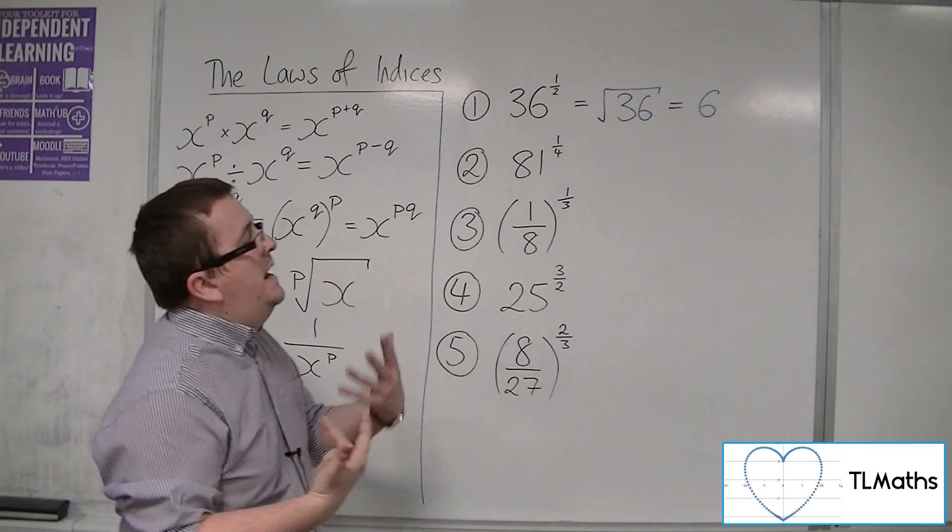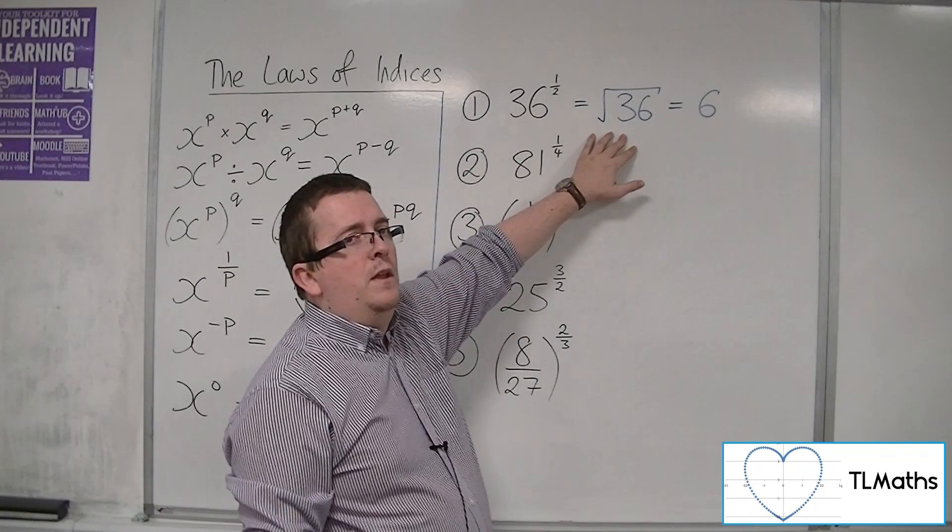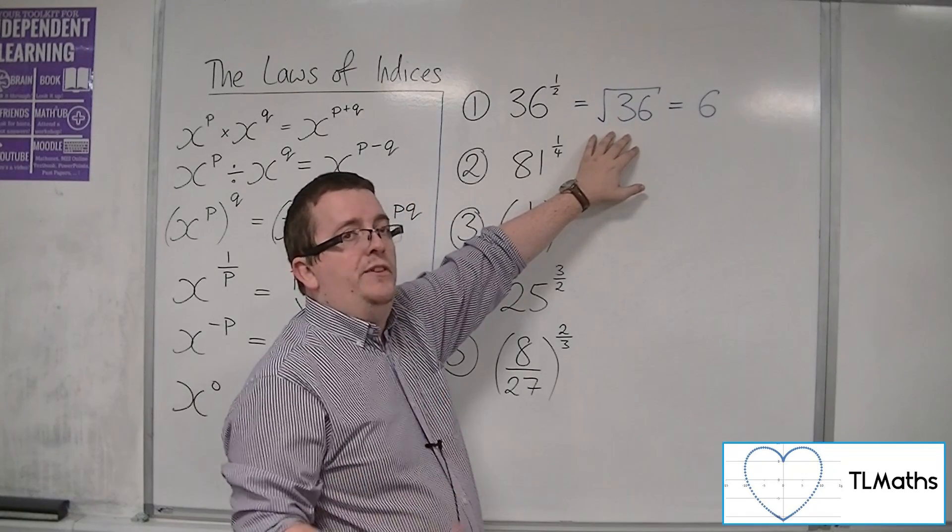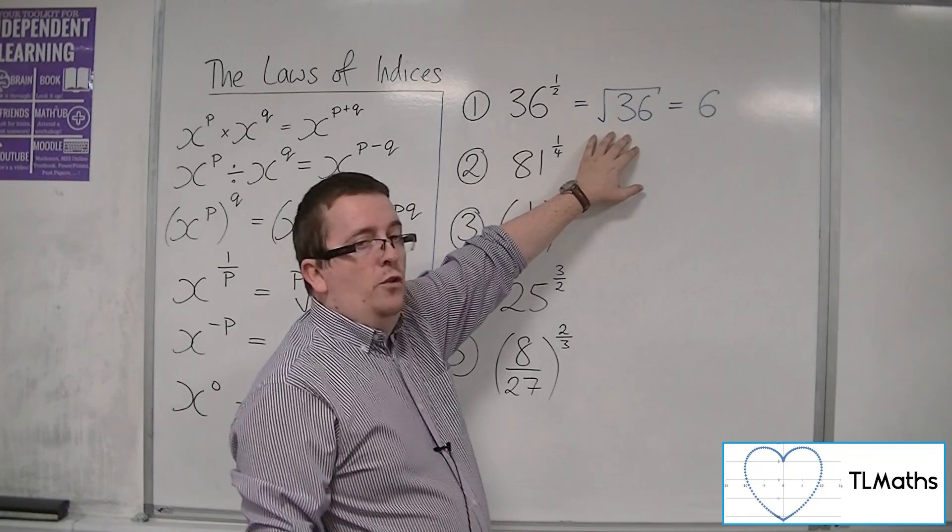So if I just write down the square root of 36 like that, all that means is the positive root, the positive square root of 36, not the negative.